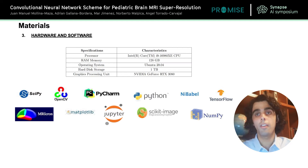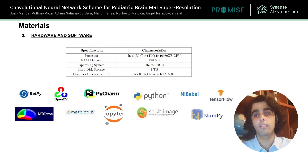Here we have the specifications for our computational equipment and also the principal software packages that were necessary for code development. It is important to highlight the NVIDIA graphics cards that helped us decrease the computational cost of the training phase significantly. Our convolutional neural network was implemented with the TensorFlow 2.0 library in the Python environment.